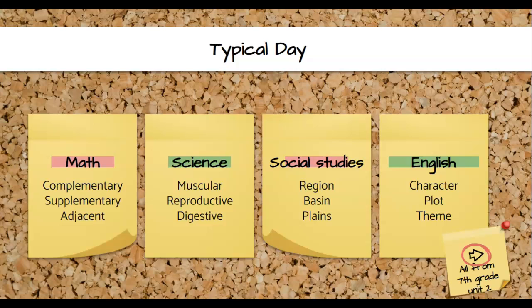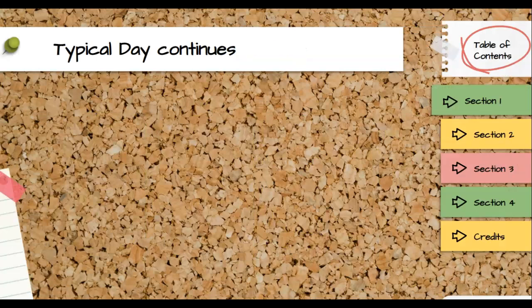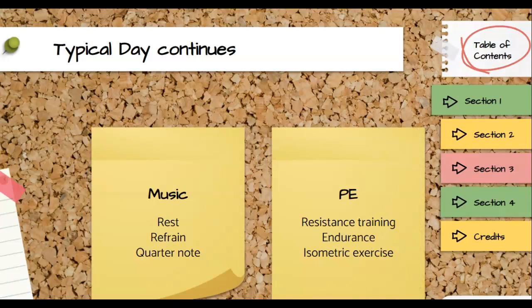This is a very heavy academic load for our students. After lunch, thank goodness for our electives — where you go to music class and you might have quarter note, rest, and refrain. Then we go to PE, and they encounter academic language there too. They learn resistance training, endurance, and isometric exercise. It's all academic language all day long. And because of that, we really need to be thoughtful about how we're teaching our vocabulary and how we're supporting our students in getting it.